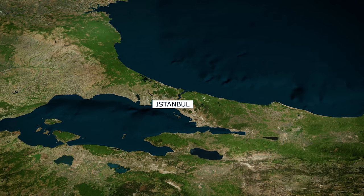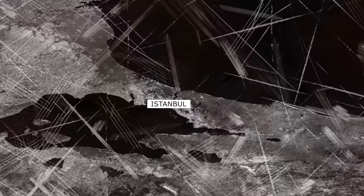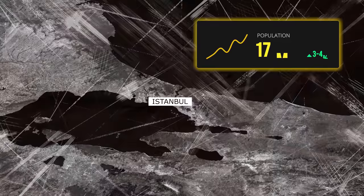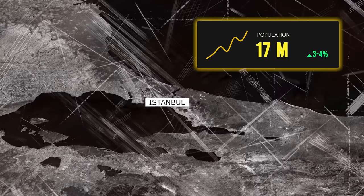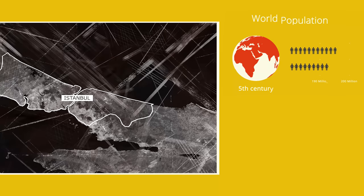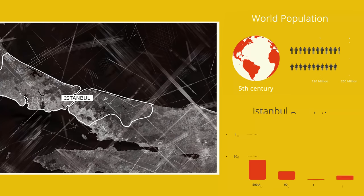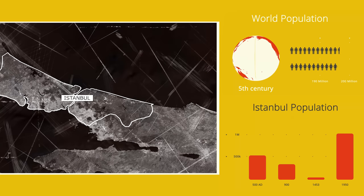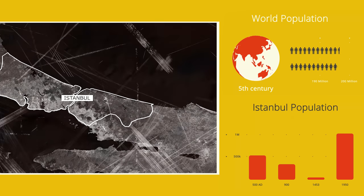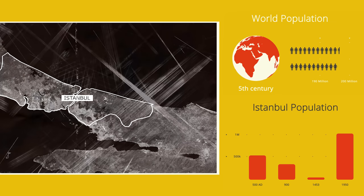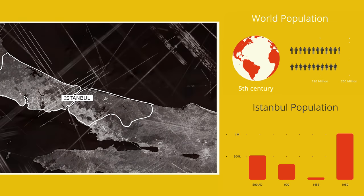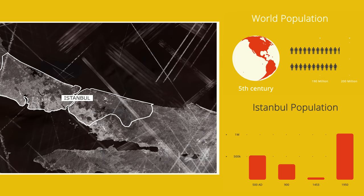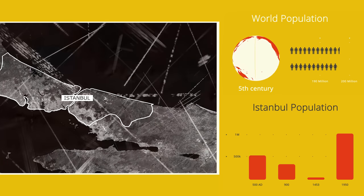Istanbul has a rapidly growing population — well, in recent years it's slowed down a bit, but we're talking about three to four percent increase per year in a city of more than 17 million people. Istanbul was the world's most populated city by around the fifth century when its population was 500,000. Then it started declining, coming down to as low as 45,000 before the Ottomans conquered the city in 1453. After the conquest, the population started growing again, hitting one million in 1950.